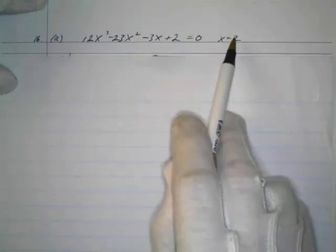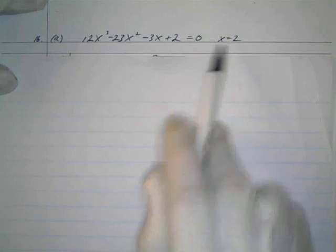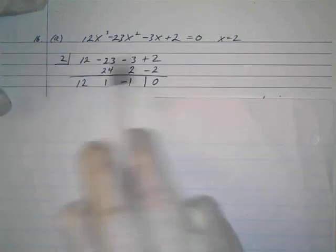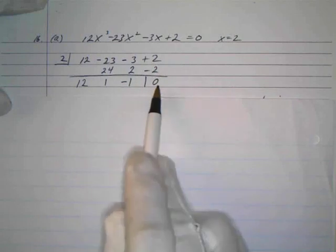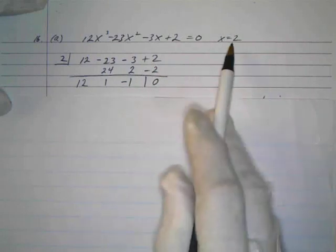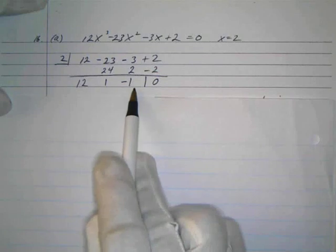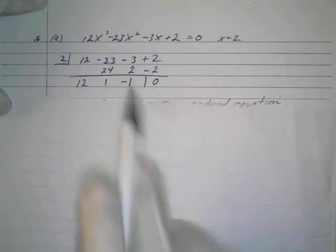We don't have a way of solving a cubic, but we can solve a quadratic. If we know this is a solution, we know that if we use synthetic division, the 2 will divide in evenly. There will be no remainder because it is a root, and this will give me the coefficients of my reduced equation.